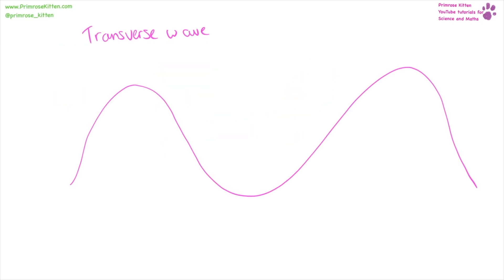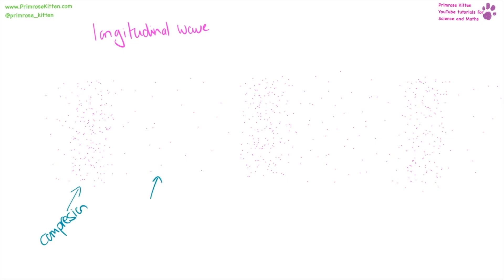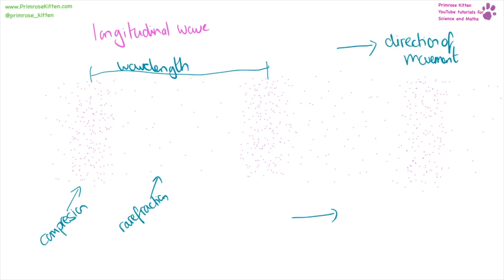A transverse wave goes up and down, and the wavelength is measured from one point to the equivalent point — for example from the top to the top or from the middle to the middle. The amplitude is measured from the middle to the top or from the middle to the bottom. The direction of oscillation is up and down and the direction of energy transfer is sideways. A longitudinal wave has areas of compression and areas of rarefaction. The wavelength is measured from one point to the equivalent point, and the direction of movement and energy transfer is side to side.